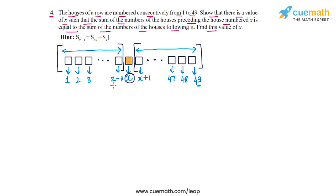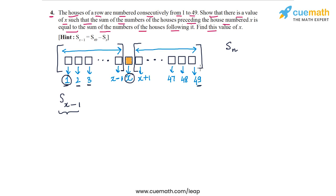We use the notation S_n to represent the sum of the first n terms of an arithmetic progression. So S_(x-1) represents the sum of house numbers from 1 to x minus 1. The house numbers 1, 2, 3, ... up to 49 form an arithmetic progression with first term 1 and common difference 1. To find the sum from x+1 to 49, we take the total sum from 1 to 49 and subtract the sum from 1 to x.